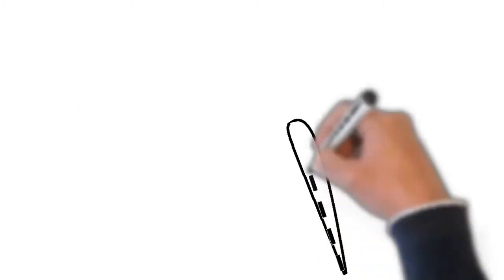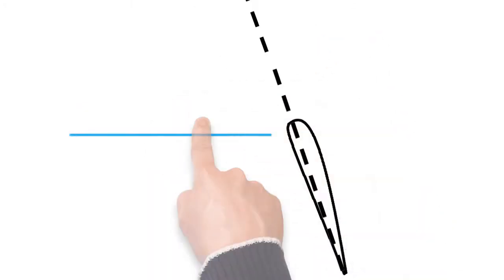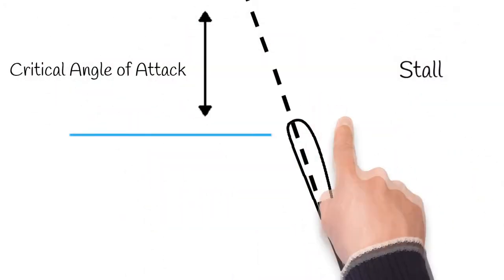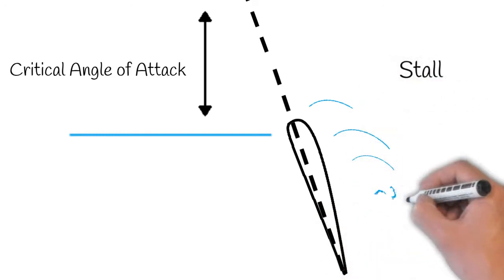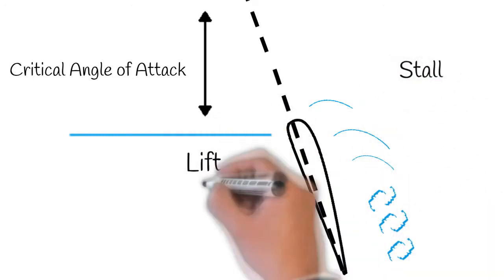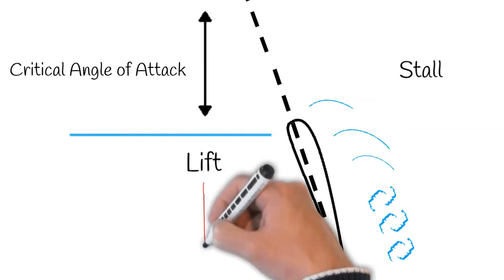Increasing the AOA increases lift until the critical angle of attack is reached. A stall occurs when the smooth air over the unmanned airplane's wing is disrupted and the lift degenerates rapidly. This is caused when the wing exceeds the critical angle of attack.